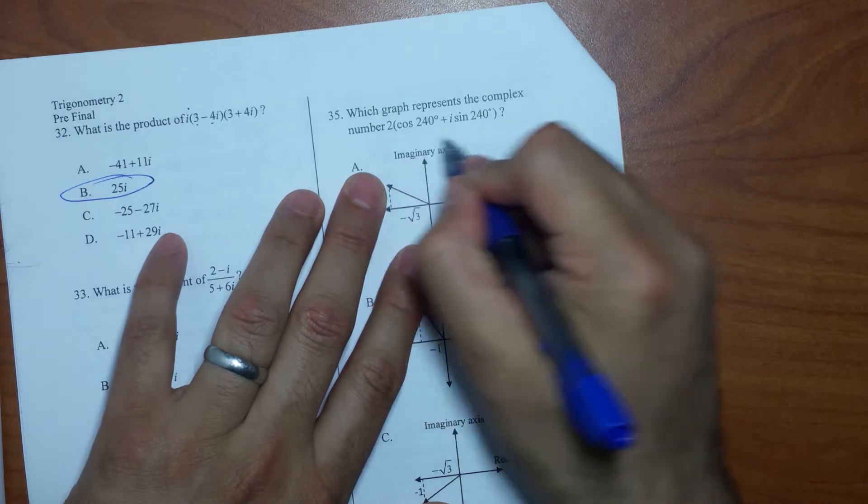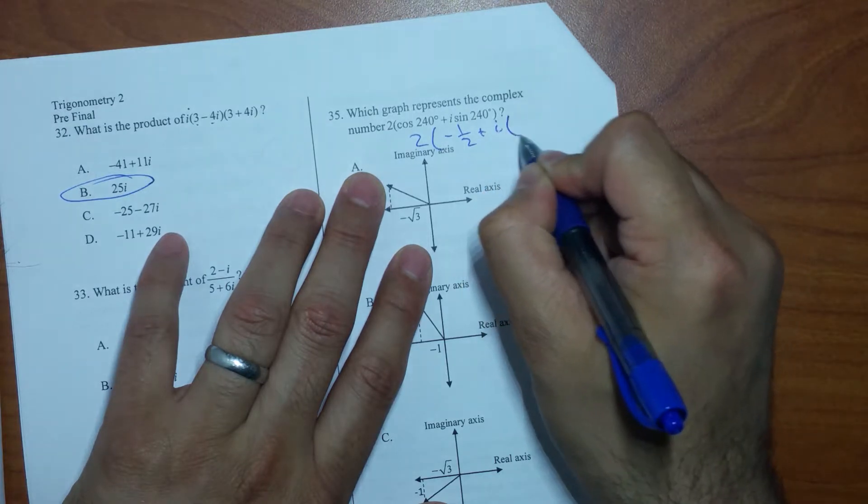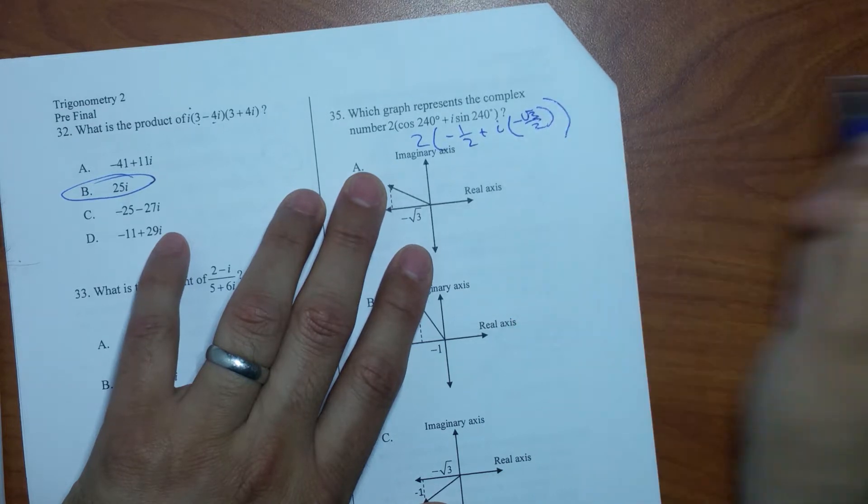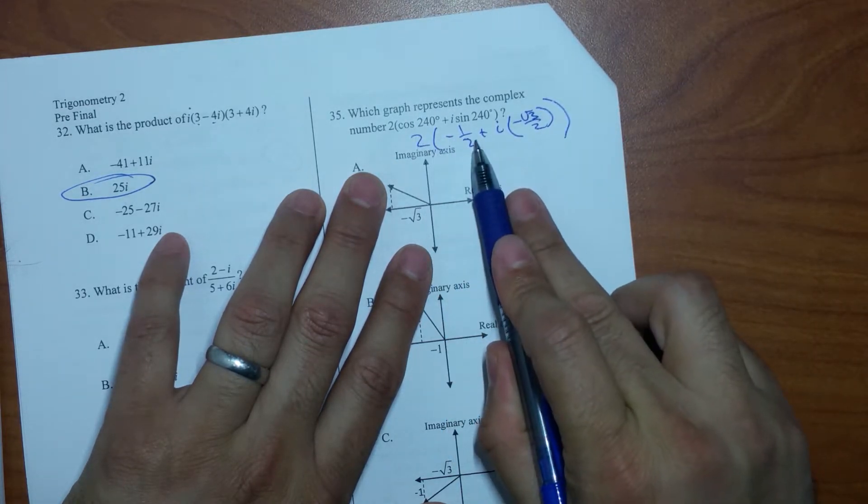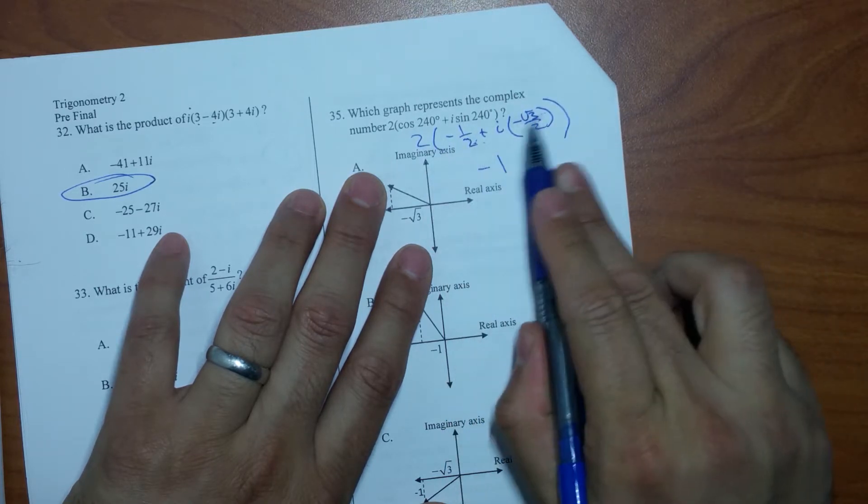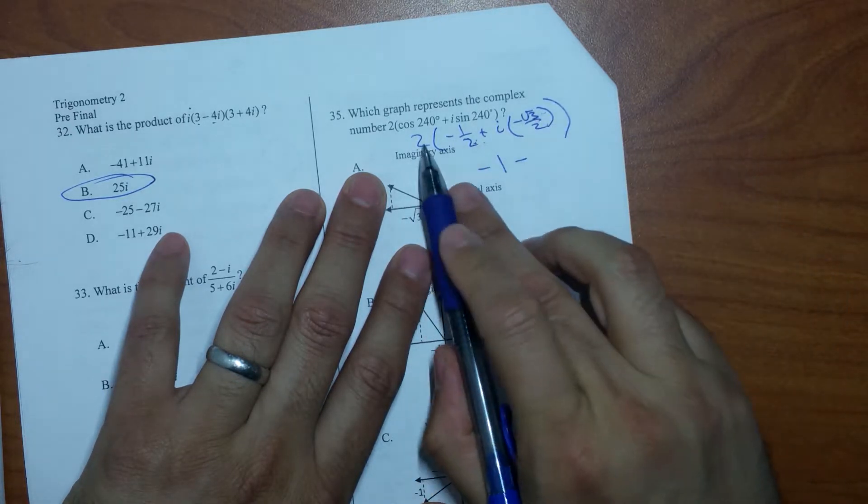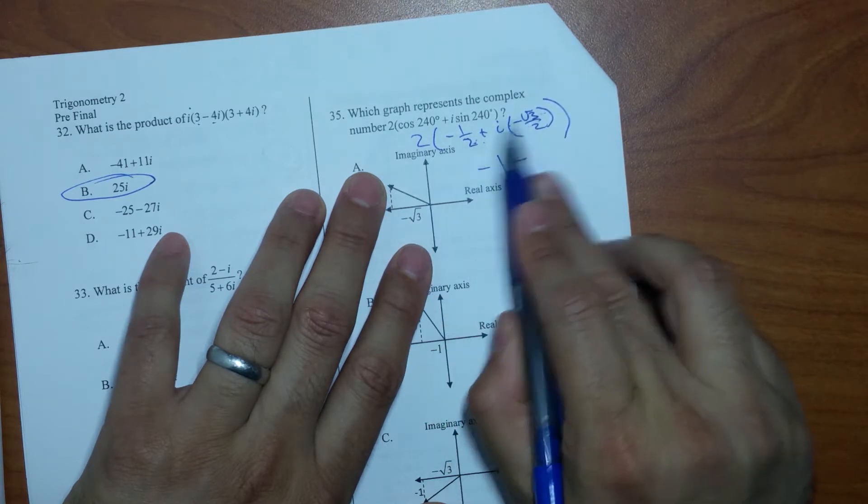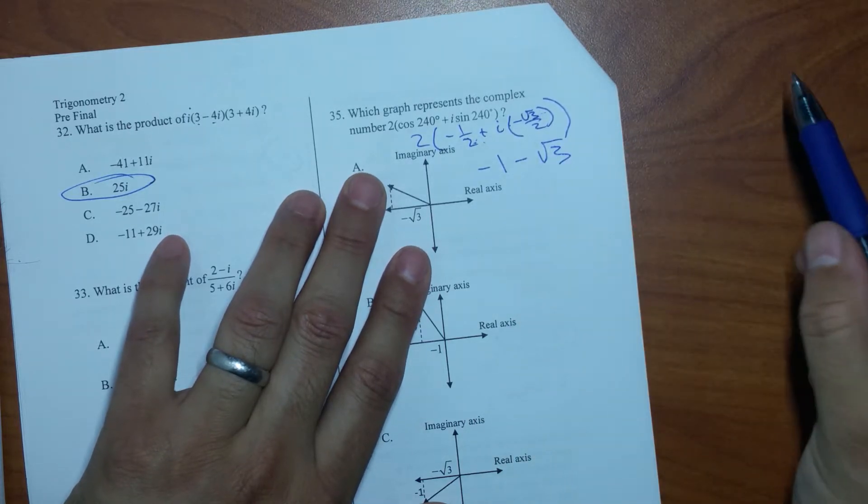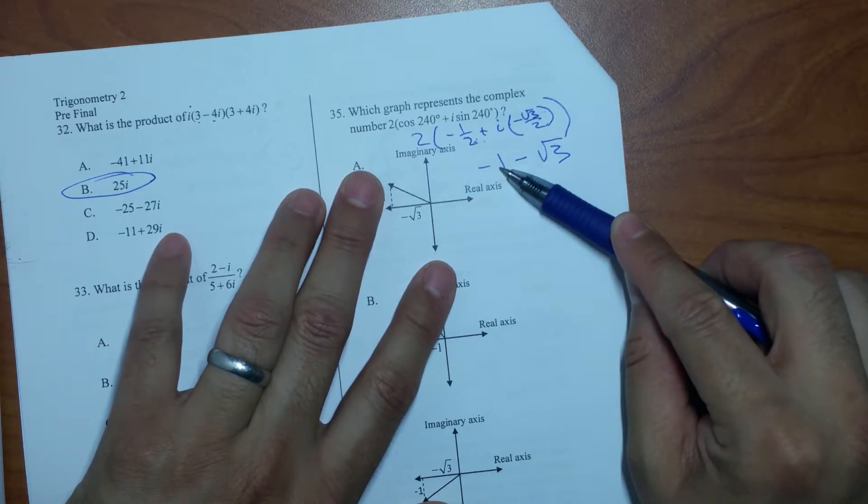Negative one half. So it's going to be 2 times negative one half plus i. What is sine at 240? Negative rad 3 over 2, right? So when I distribute that, this is going to give me a negative 1, and this is going to give me a minus, right? It's a minus sign, right? i. And what's going to happen to that radical 3?